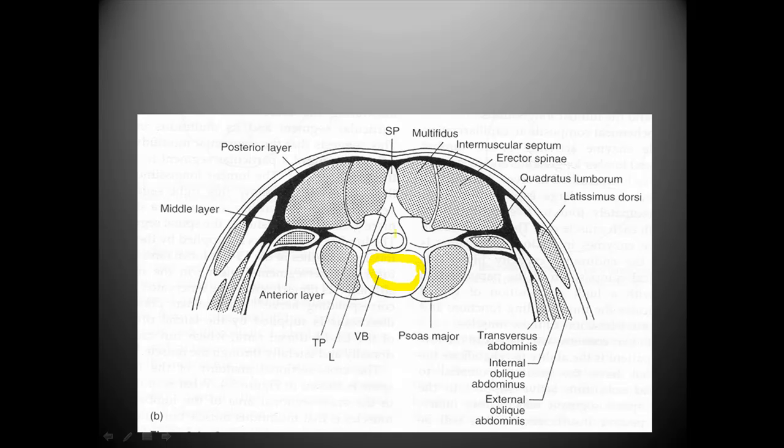Here is the vertebral body, the spinous processes, and the transverse processes. The thoracolumbar fascia consists of this large sinewy tissue with multiple layers. This is the most superficial outer layer which attaches onto the tips of the spinous processes in the lumbar spine, and there are deeper layers which attach to the tips of the transverse processes.